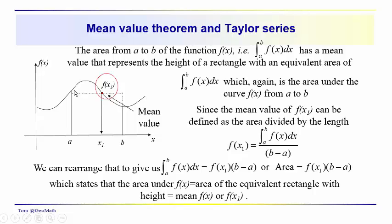The idea starts off with this relationship: if we have a function f of x defined over a range a to b, it's continuous and it's differentiable, its area is going to be the integral from a to b of f of x dx — a definite integral. At some point along this curve between a and b, f of x will take on a value equal to the average value of f of x between a and b, such that if we multiply this value times b minus a we get the area of an equivalent rectangle.